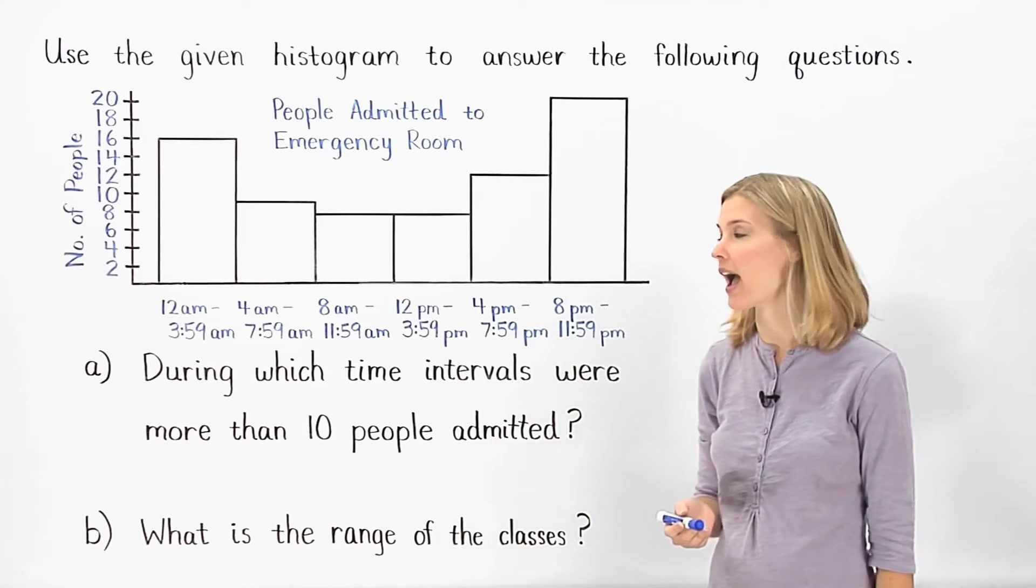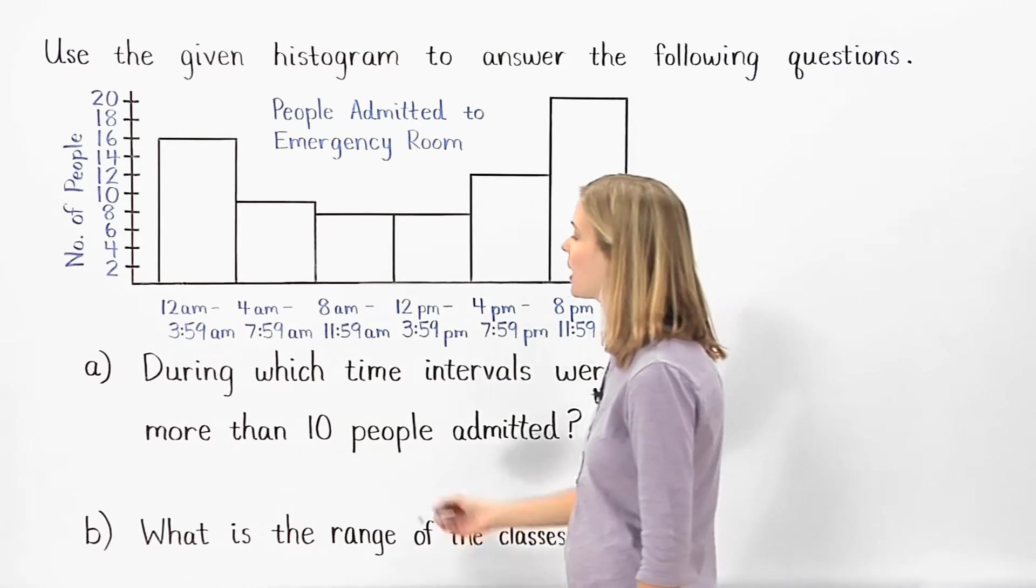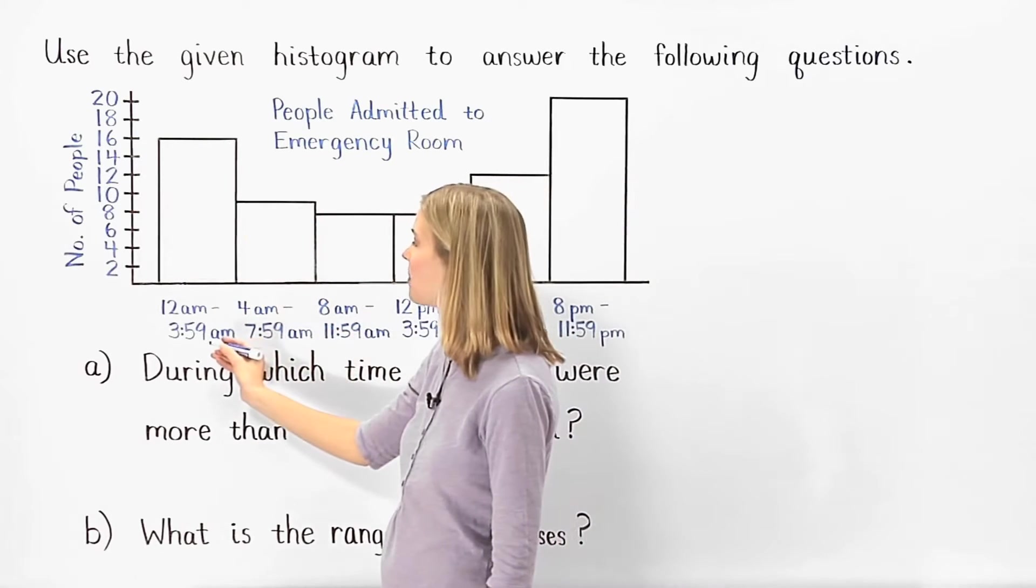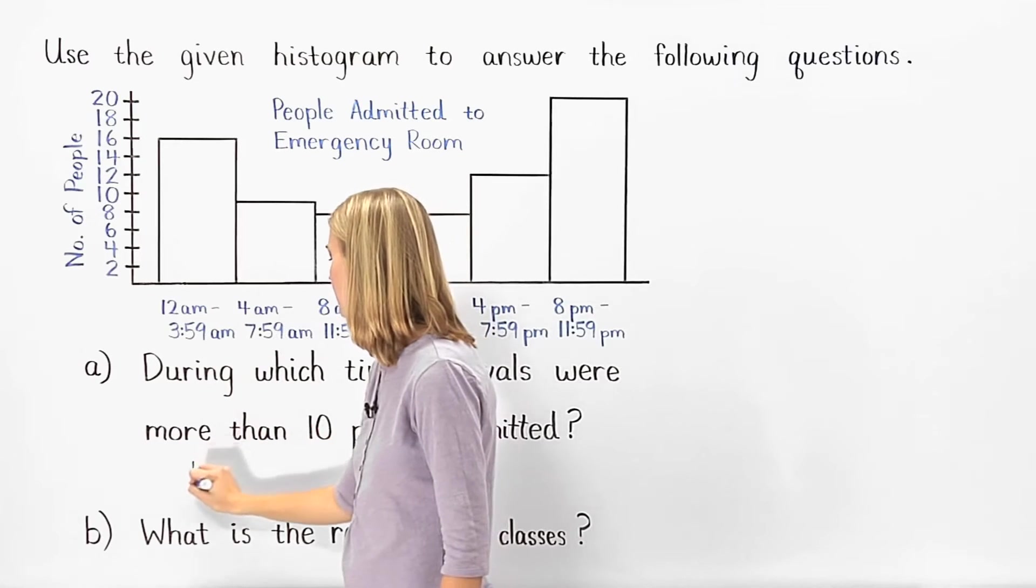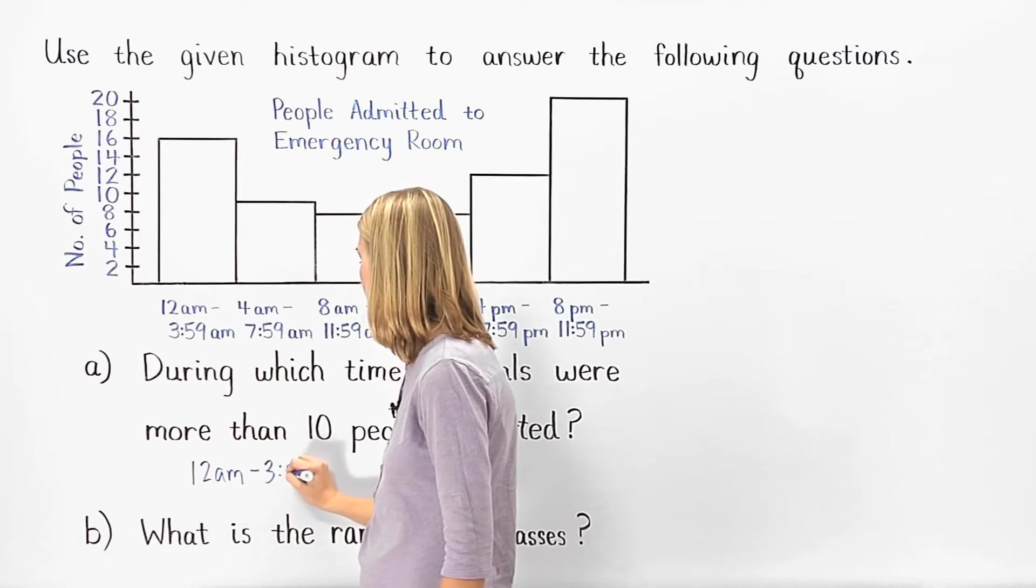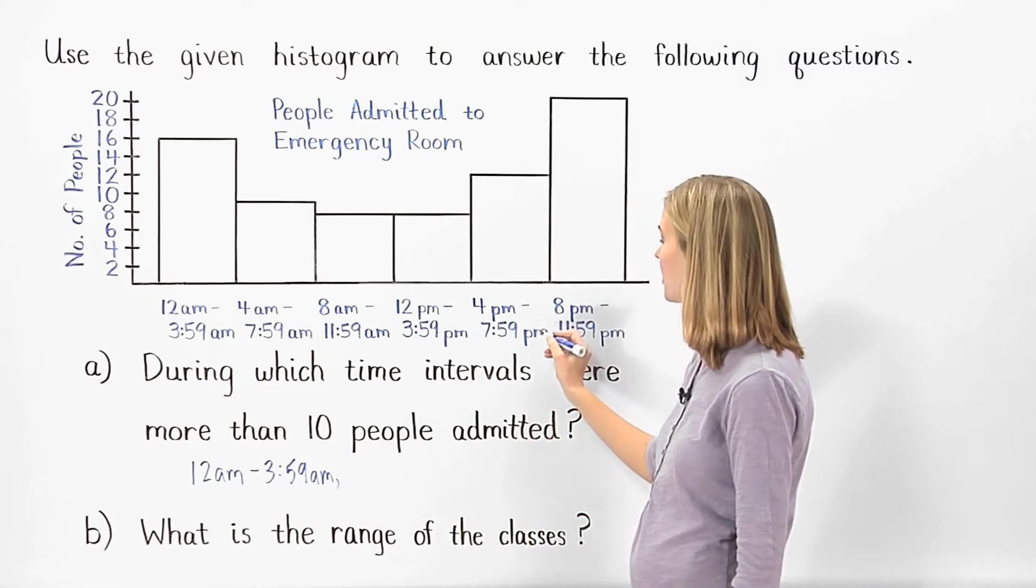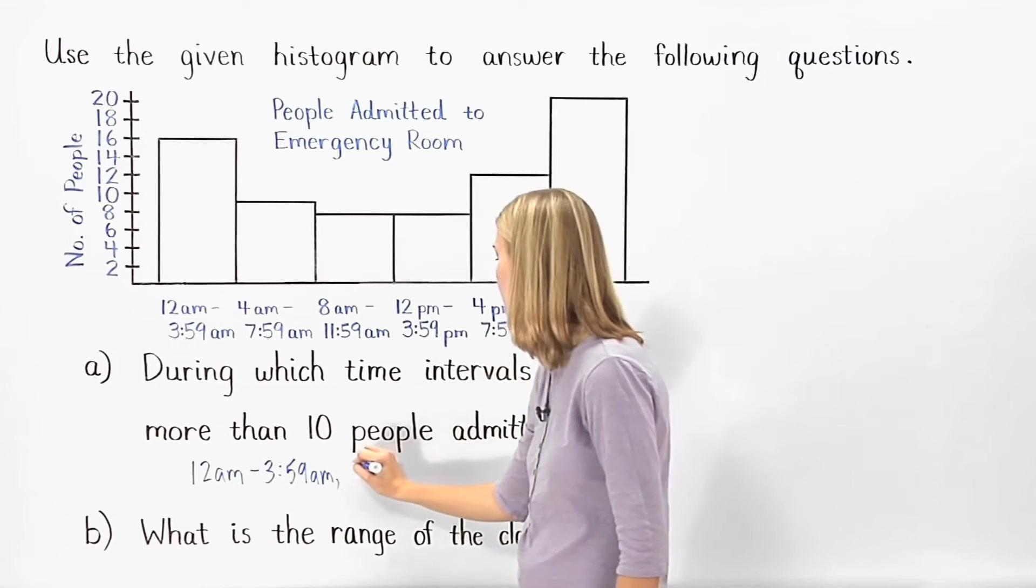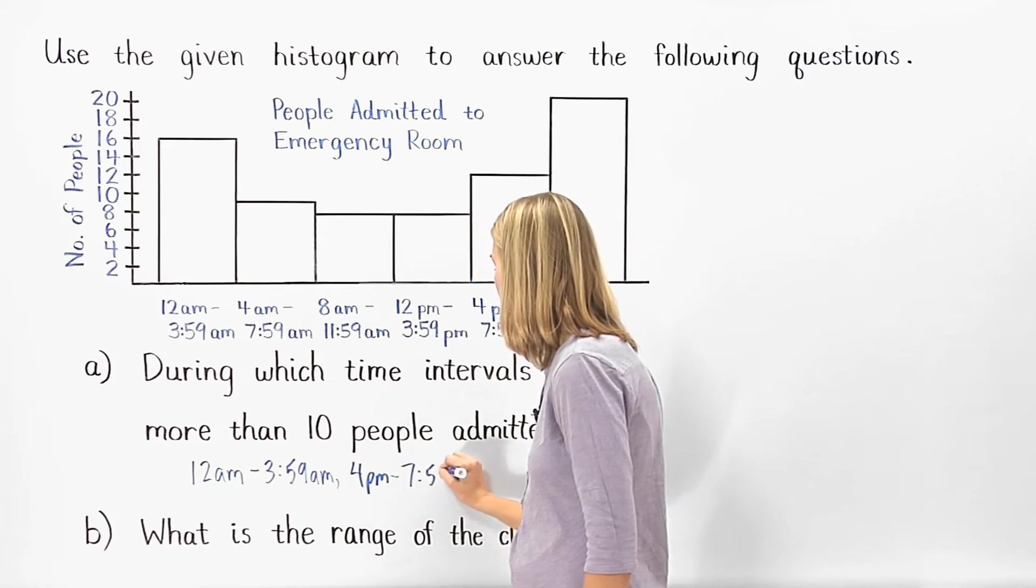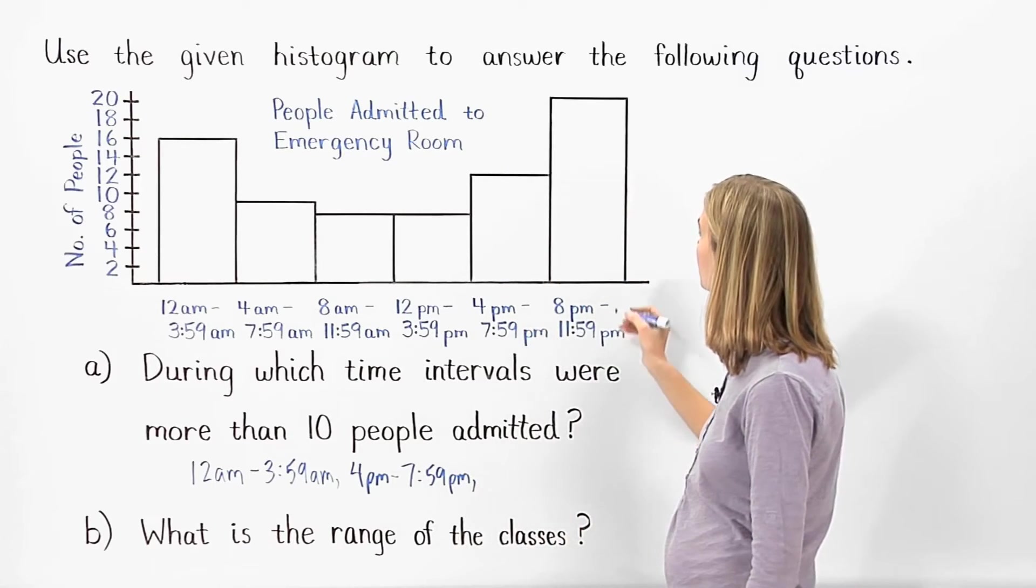Now, in part A, we're asked, during which time intervals were more than 10 people admitted? We can see that more than 10 people were admitted between 12 a.m. and 3.59 a.m., between 4 p.m. and 7.59 p.m., and between 8 p.m. and 11.59 p.m.